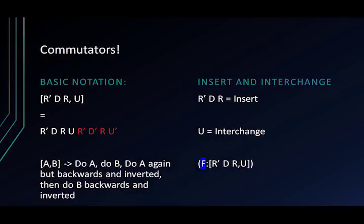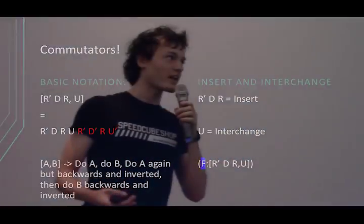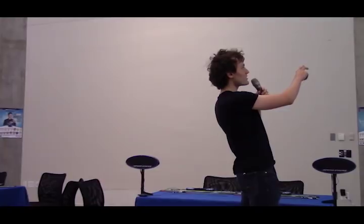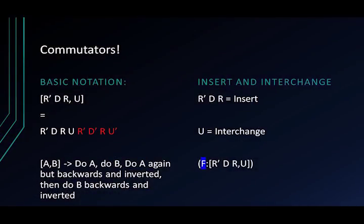Commutators — this is how you get into advanced 3-blind. You all probably know a commutator right now if you know any of them. The basic notation: if you ever see a notation like [A, B] in those little brackets, we turn it into: do A, do B, then do the inverse of A, then do the inverse of B.